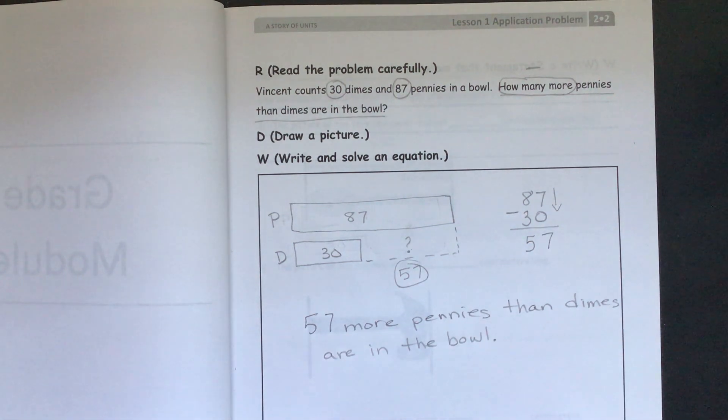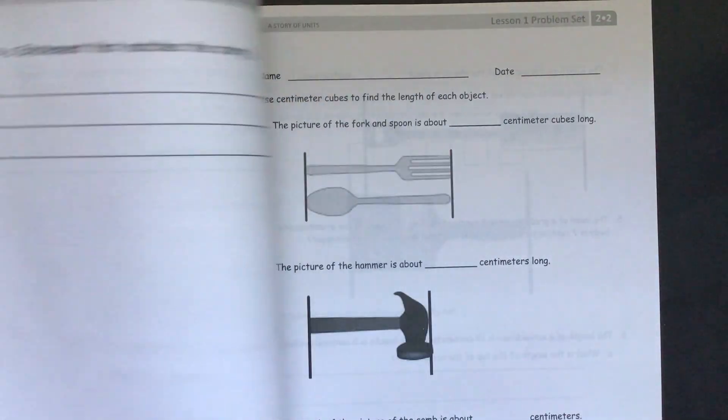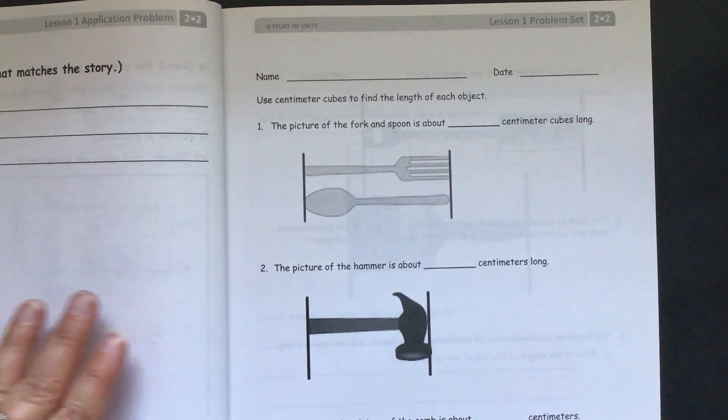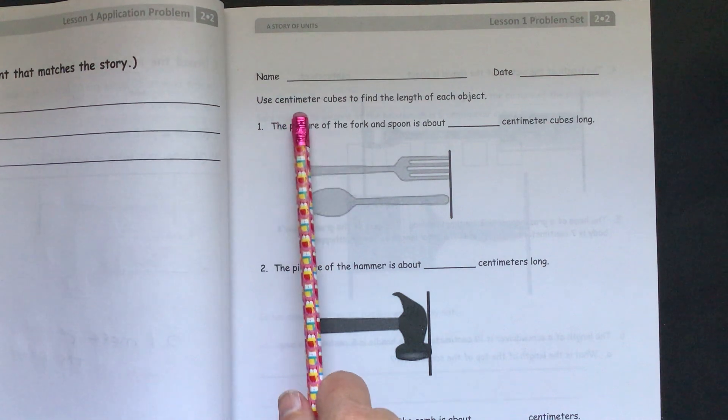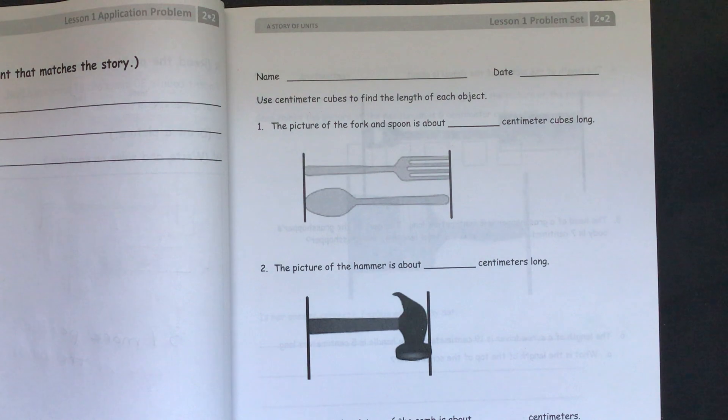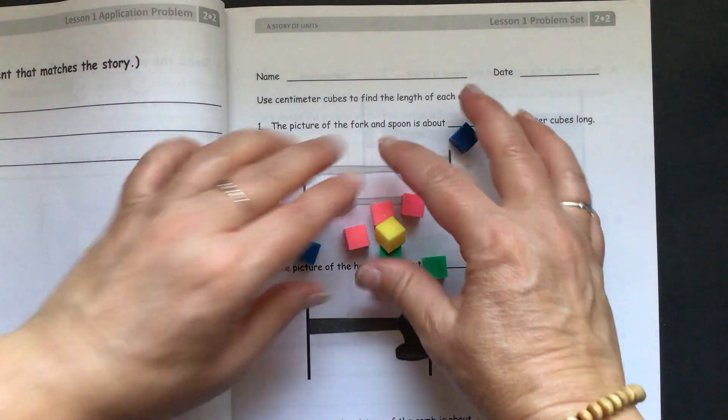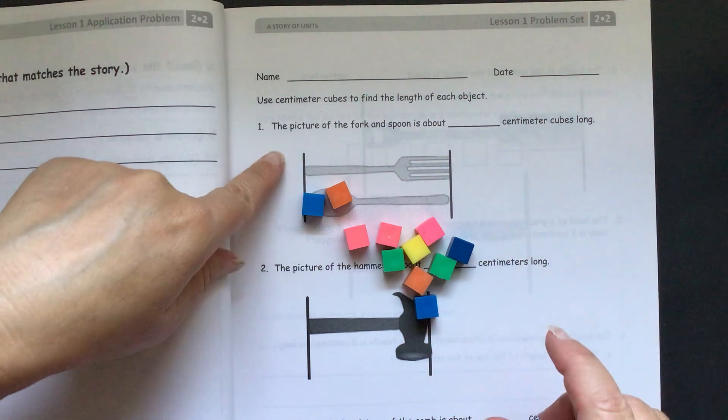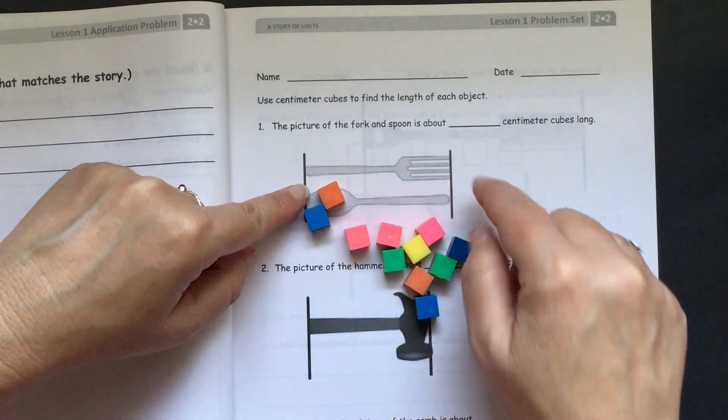So then we will flip on over to our problem set. And our directions say, use centimeter cubes to find the length of each object. So I have some centimeter cubes here. Each one equals a centimeter. So what we need to do is measure each one of these.